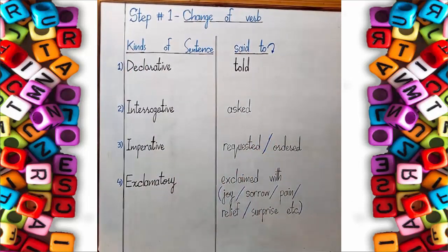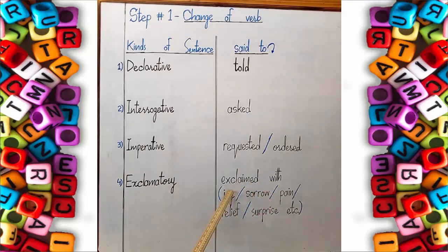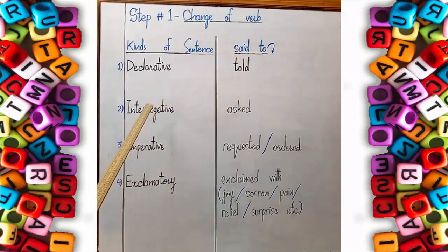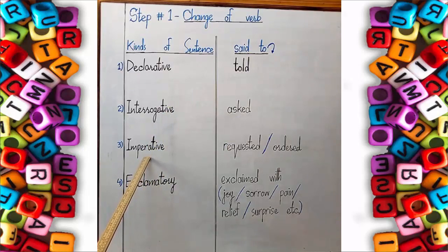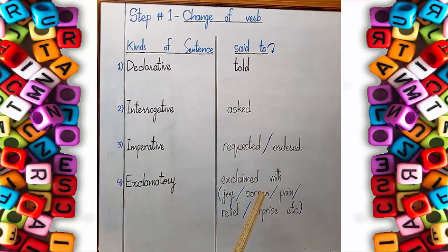So the chart given here shows: if you have a declarative sentence, change 'said to' into 'told'; if you have an interrogative sentence, change 'said to' into 'asked'; if there is an imperative sentence, change 'said to' into 'requested' or 'ordered'; if there is an exclamatory sentence, change 'said to' into 'exclaimed with joy, or sorrow, or pain, or relief, or surprise', etc.